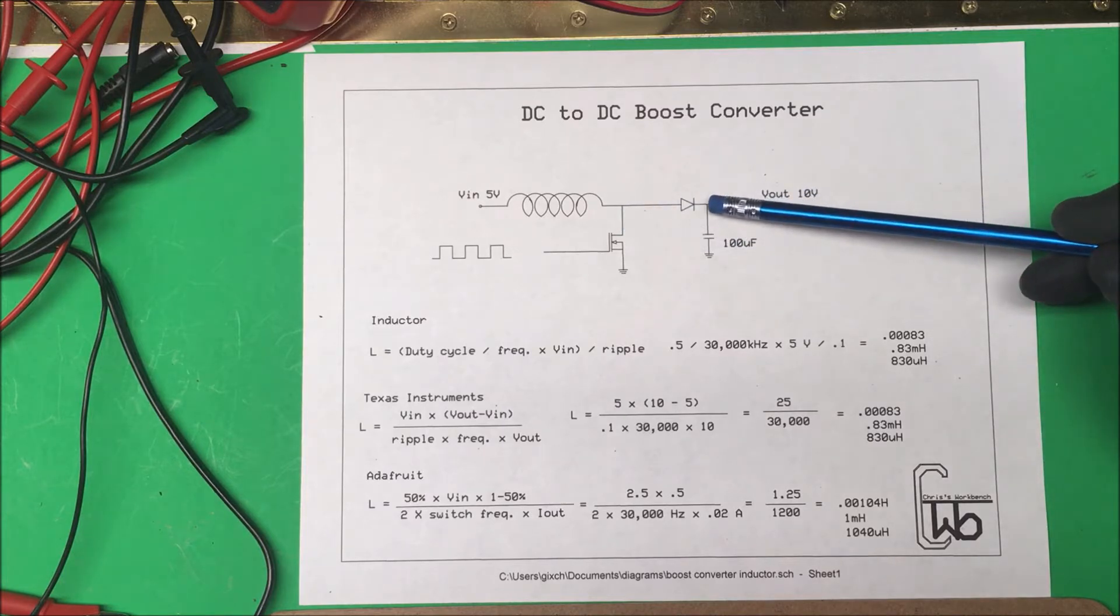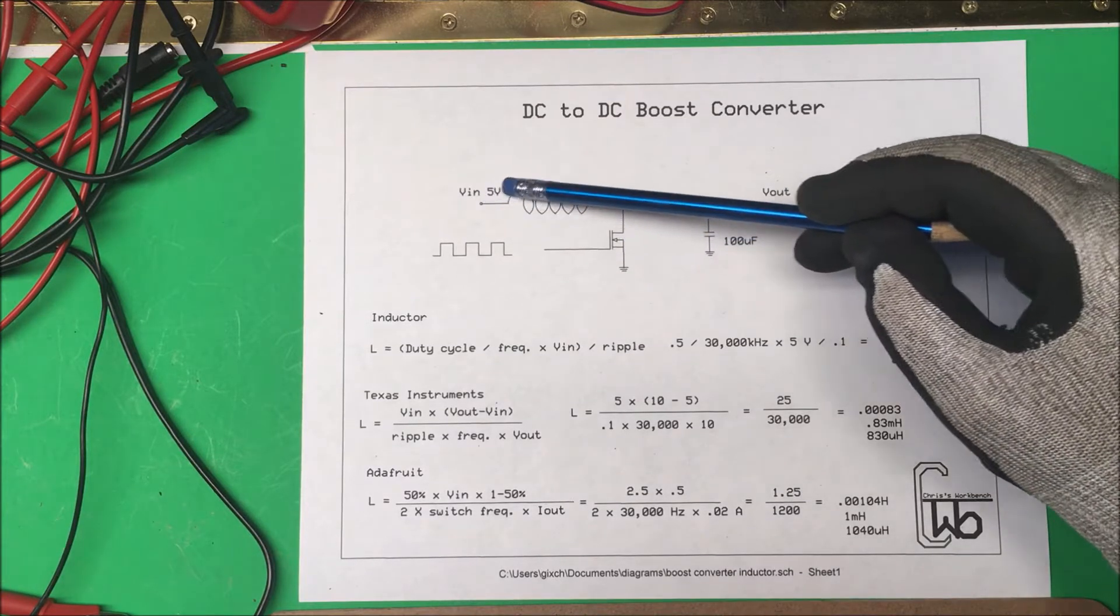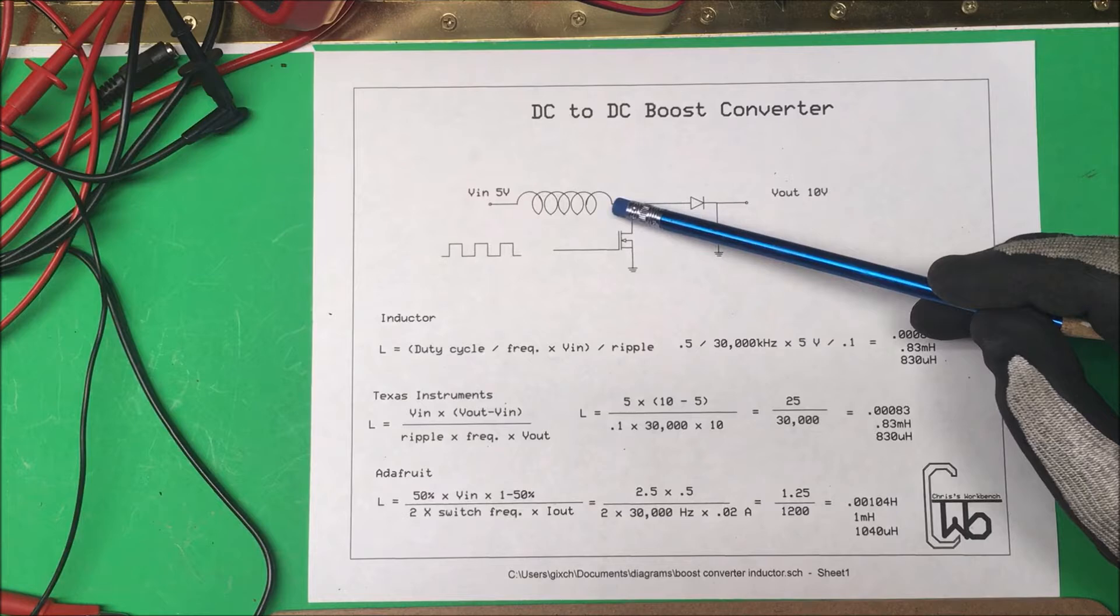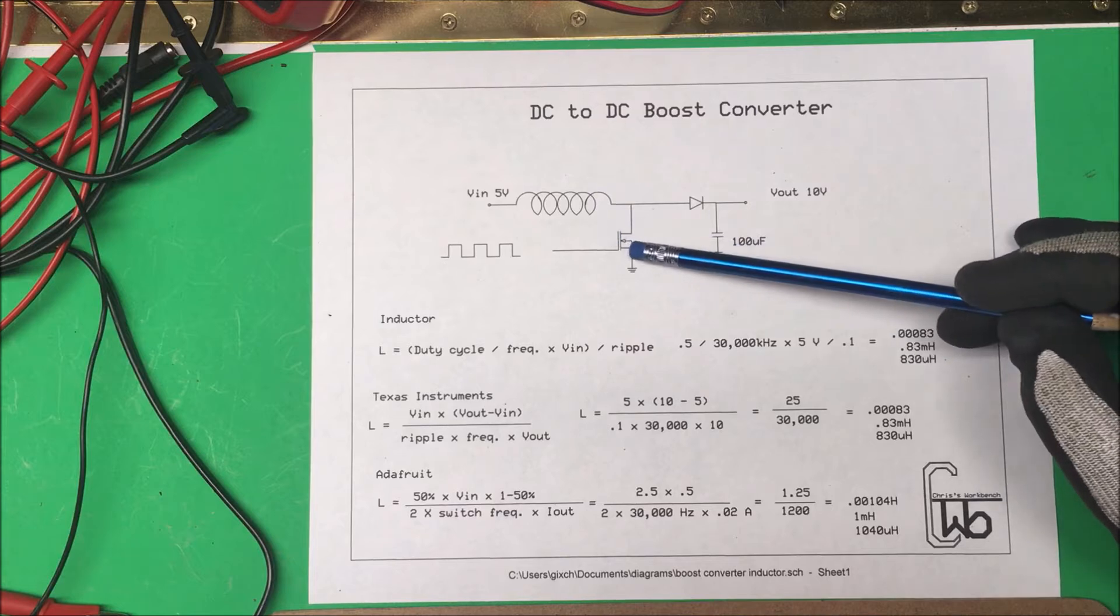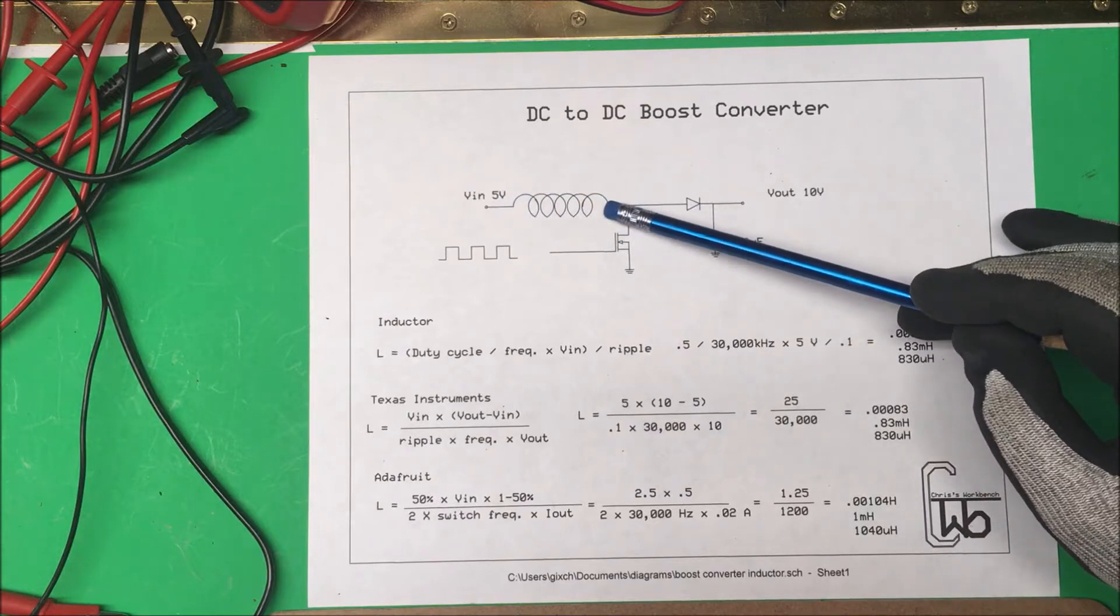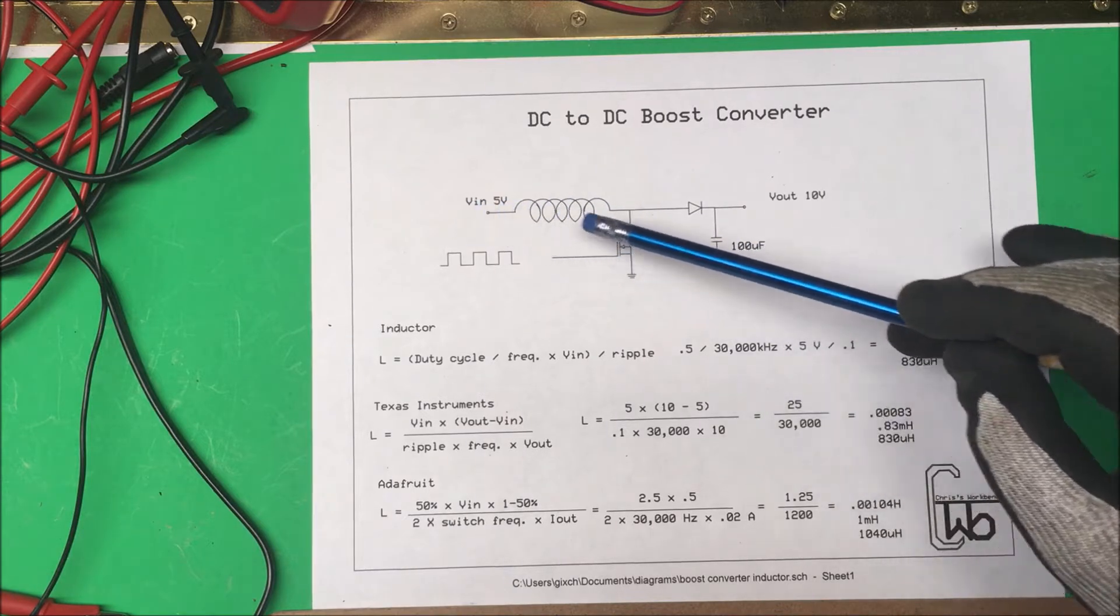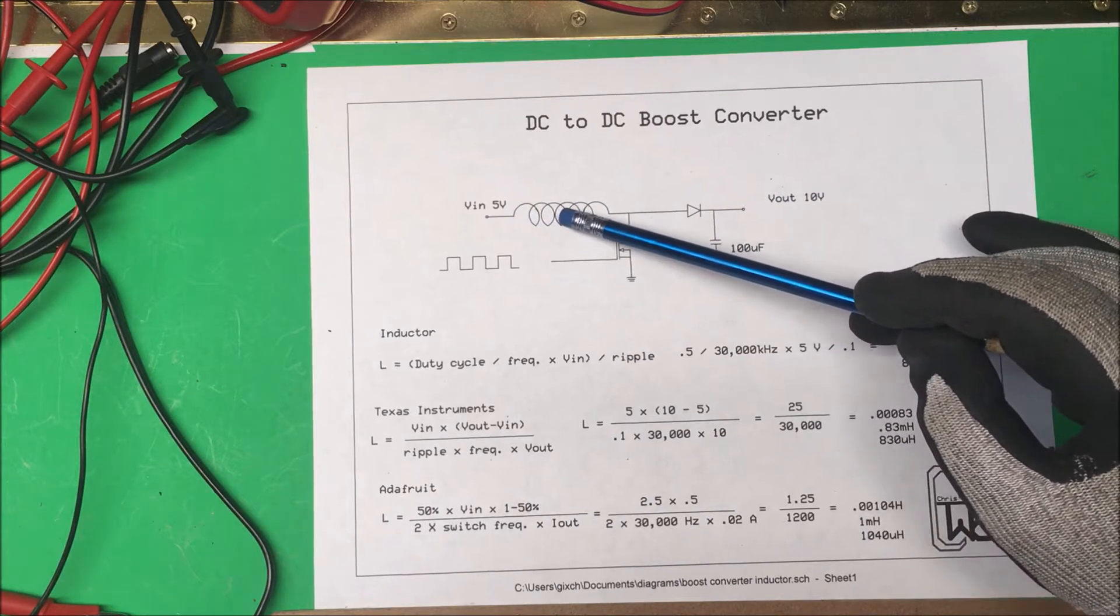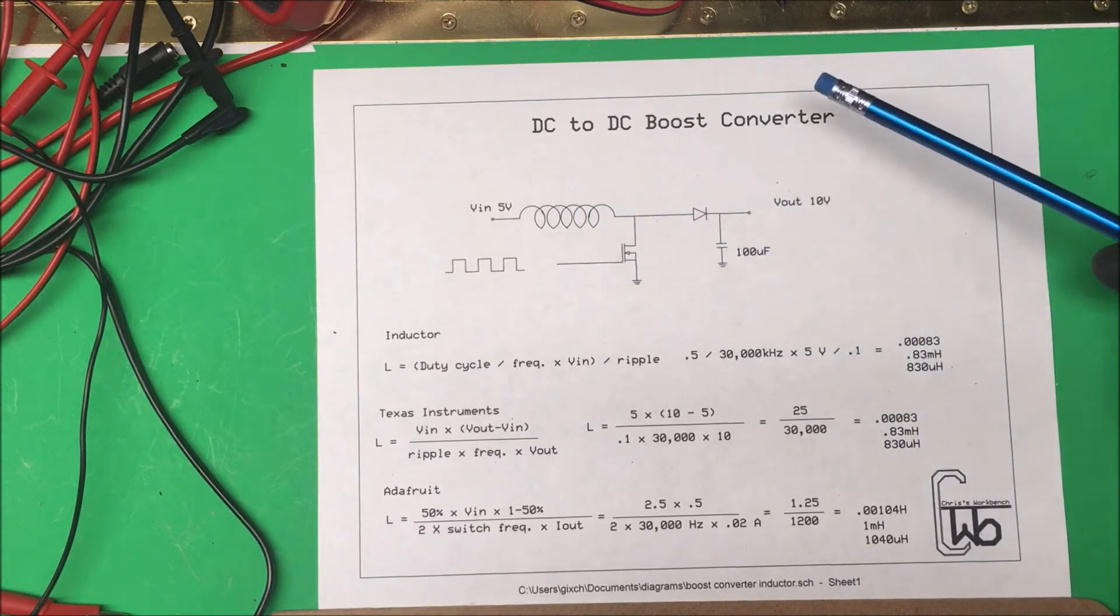When we energize this MOSFET, current flows through the inductor to ground. This side becomes positive, this side negative, building up a magnetic field in the coil. When we open this up, the field collapses and the polarities reverse. This puts the collapsed field in series with the voltage coming in, so the voltage adds up. We add whatever the voltage here is in the collapse plus our 5 volts, so it's always going to be greater than our input voltage.